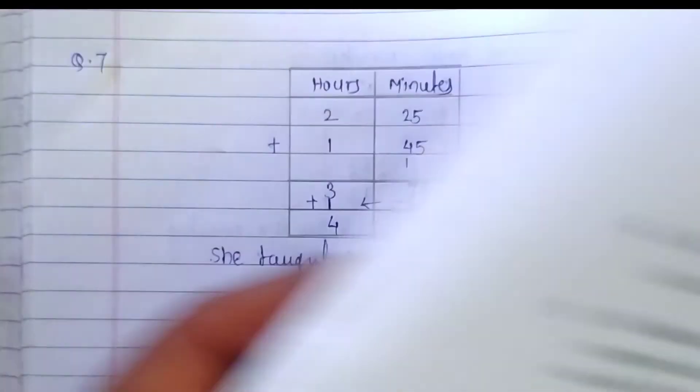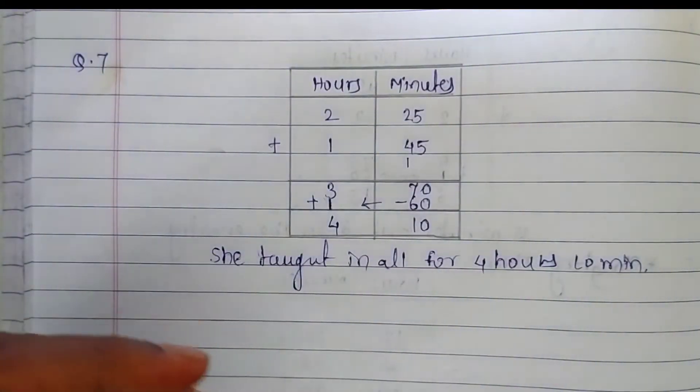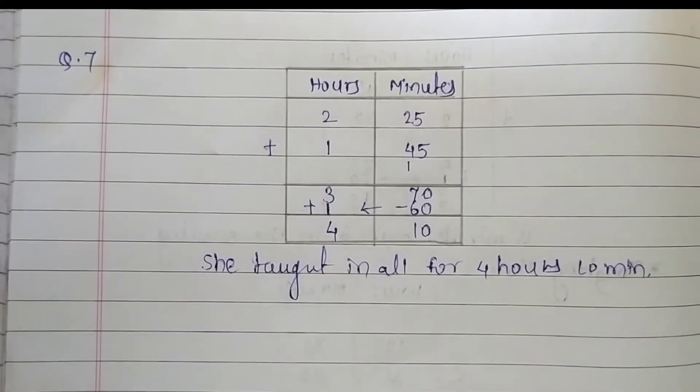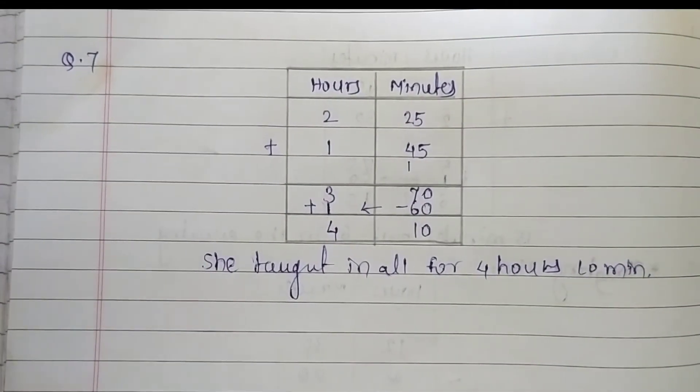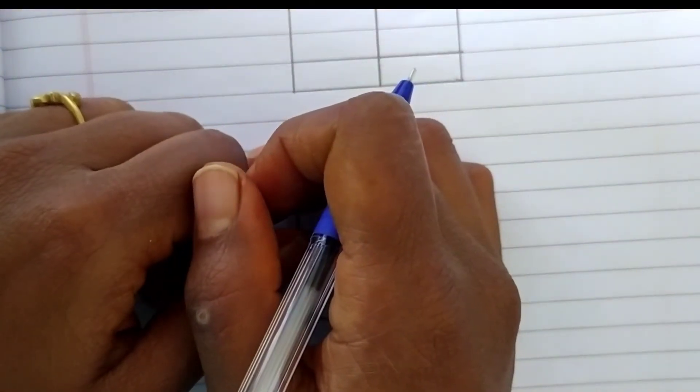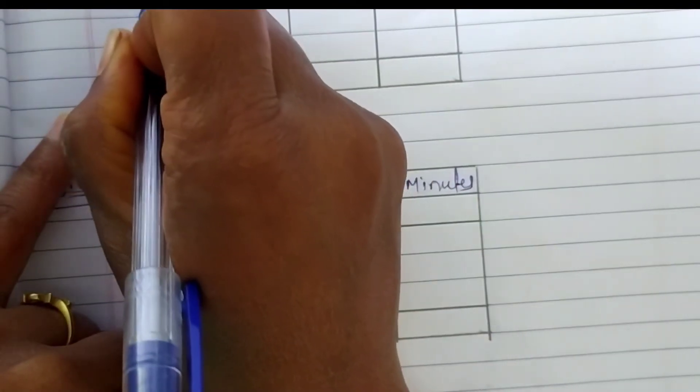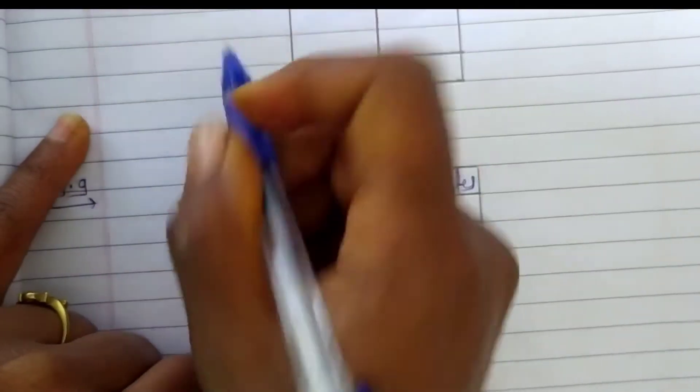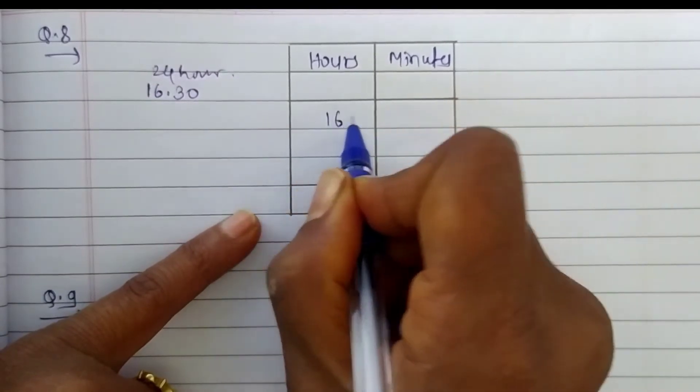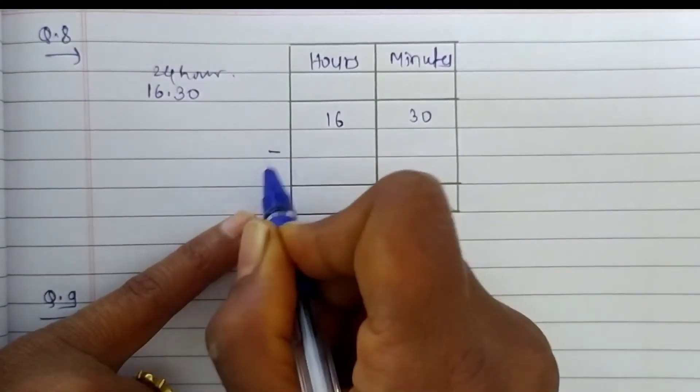So to finding this time, we have to subtract 4:30 and 10 in the morning. Let's convert 4:30 into 24 hour clock. It will be 16:30, 16 hours and 30 minutes in 24 hour clock.